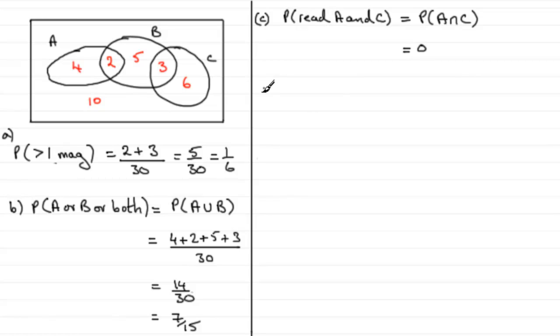Now for D, we're asked, or we're told anyway, that a student reads at least one magazine. We're given that a student reads at least one magazine. What's the probability that it happens to be magazine C? So my intro for this would be the probability that a student reads C given that they read at least one magazine.